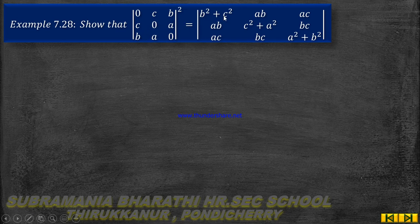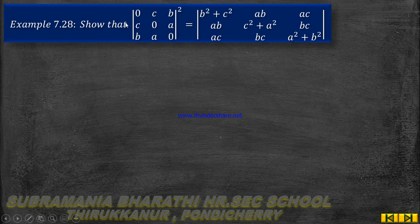...the determinant with entries B squared plus C squared, AB, AC; AB, C squared plus A squared, BC; AC, BC, A squared plus B squared.